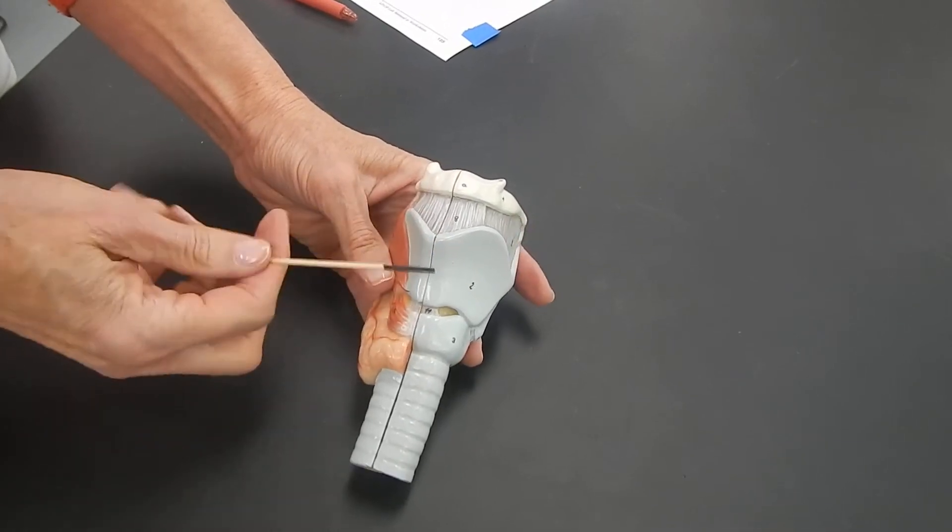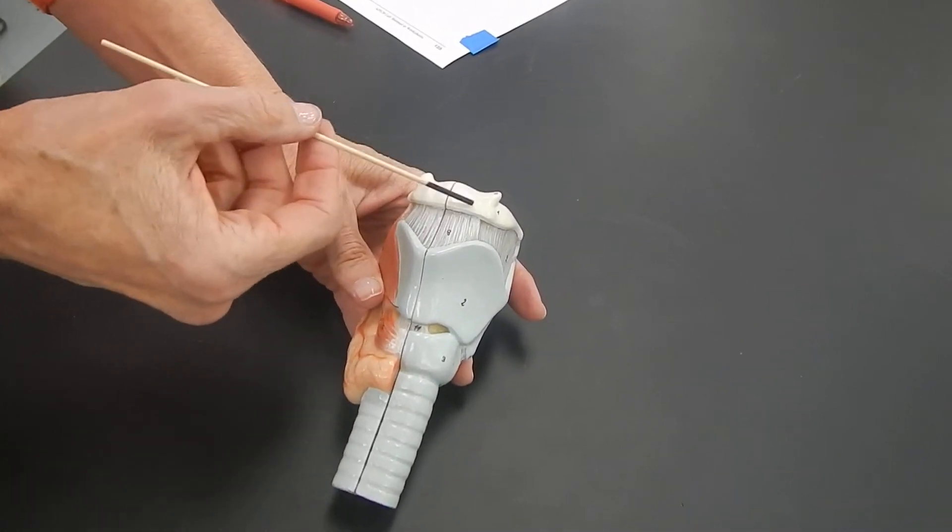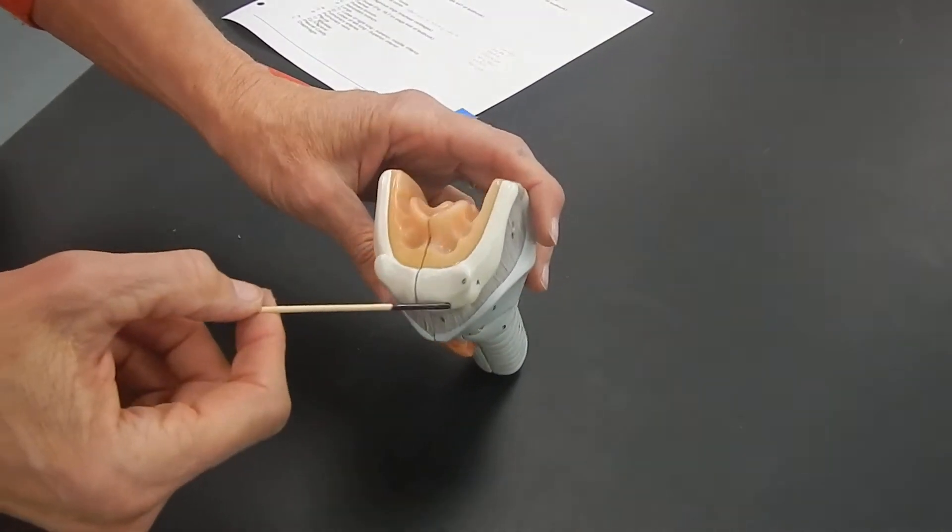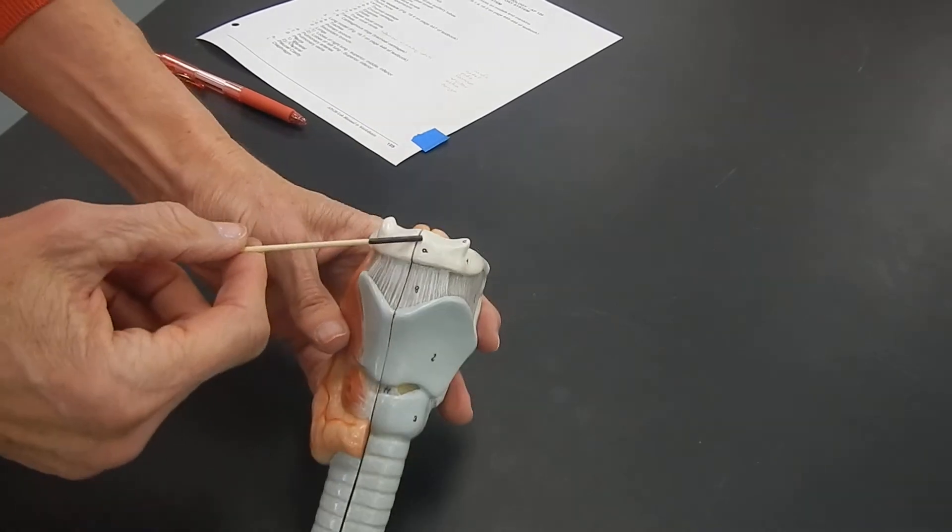The larynx is attached to the rest of your throat by this bone. This bone is called the hyoid bone. It's that one horseshoe-shaped bone.